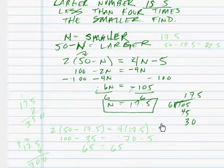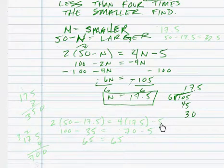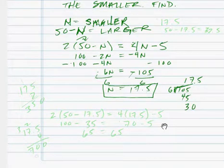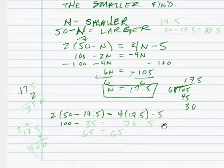And let's see if that works. So we just put in 17.5 into our equation to check the equation. So 2(50 - 17.5) equals 4(17.5) - 5. And 2 times 50 is 100. 2 times 17.5 is 35.